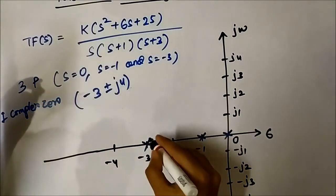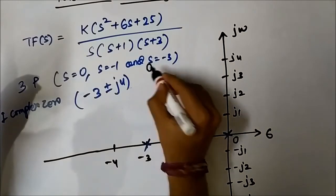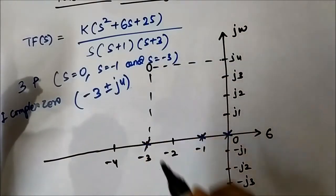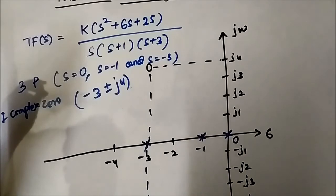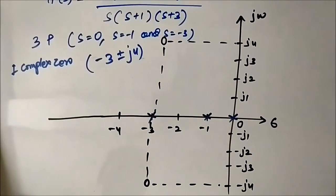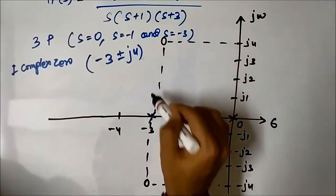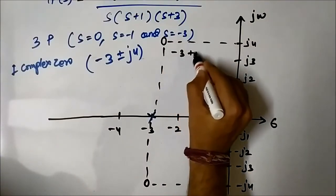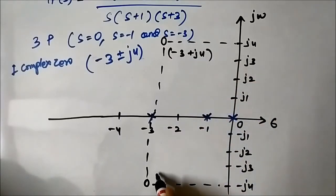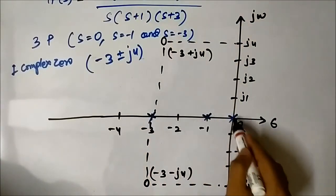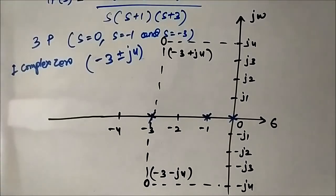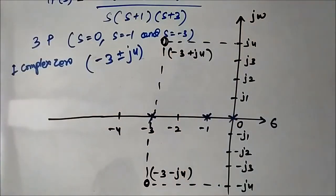Marking the zeros: at minus 3 plus j4 we place one circle (zero), and at minus 3 minus j4 we place another circle (zero). These are the complex zero pair at minus 3 plus-or-minus j4, and the crosses at 0, minus 1, and minus 3 are the simple poles with no imaginary parts.